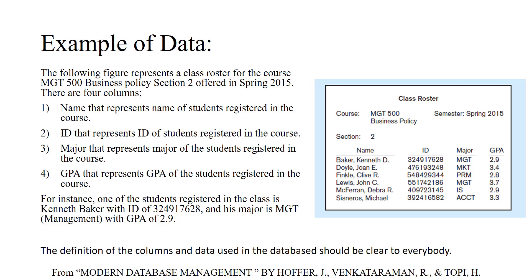When you look at this data you can understand what the ID means — for example, it has nine-digit numbers. But for someone who does not know the data or this table, we have to have a clear definition. Otherwise they may enter a social security number as the student ID. So in a database, everything should be clear to everybody.